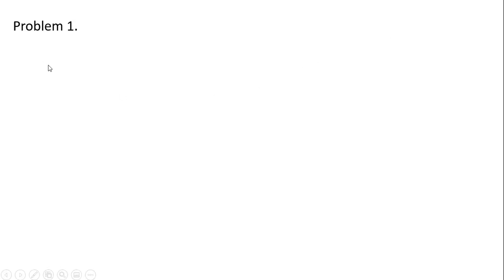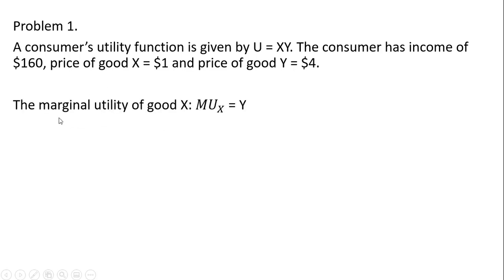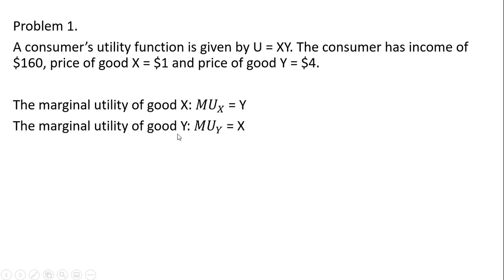Problem one. A consumer's utility function is given by u equals x times y, where x is units of good x, y is units of good y, and the consumer has the following income and faces the following prices. These are per unit prices. The marginal utility of good x equals y, and the marginal utility of good y equals x.